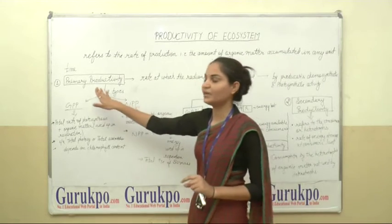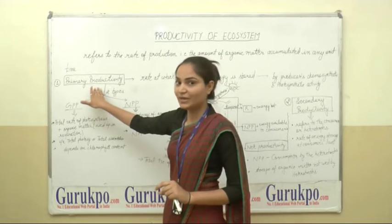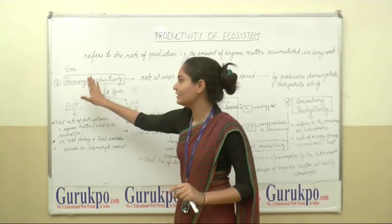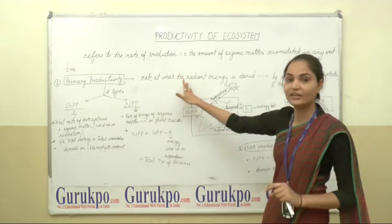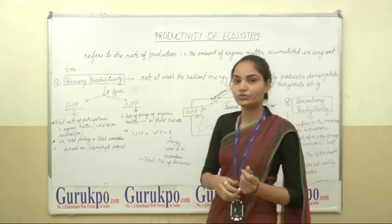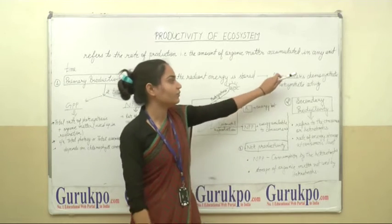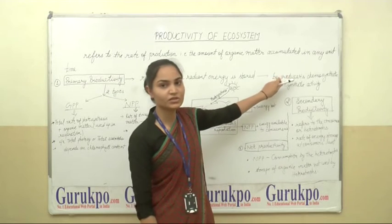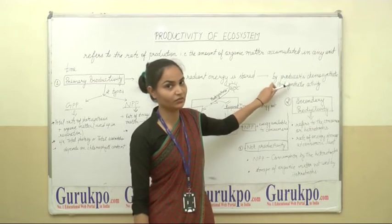The first one is primary productivity. So what is the primary productivity? The primary productivity is the rate at which the radiant energy is stored. This can be done by the producers, through chemosynthetic and photosynthetic activity.